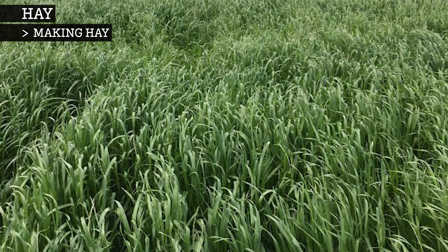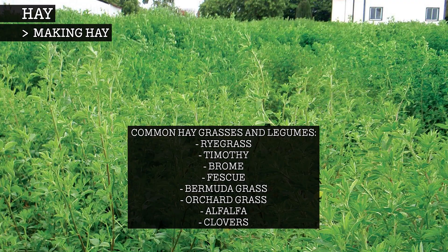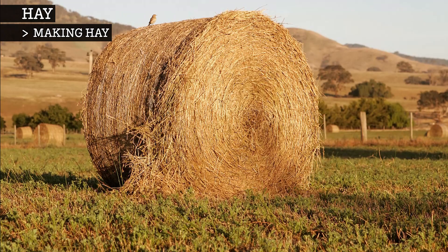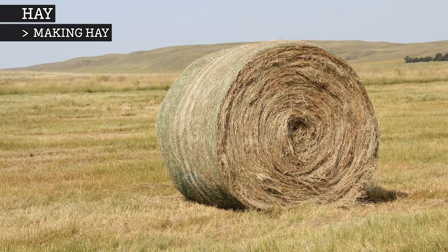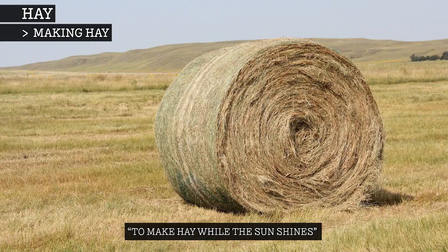Hay is more often used as animal food. Commonly used plants for hay include a mixture of grasses, such as ryegrass, and may also include legumes, such as alfalfa and clovers. The biggest challenge and risk for farmers in producing hay crops is the weather, especially the weather of the particular few weeks when the plants are at the best age or maturity for hay. This is reflected in the idiom, to make hay while the sun shines.